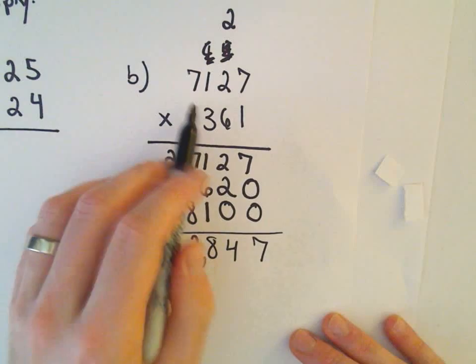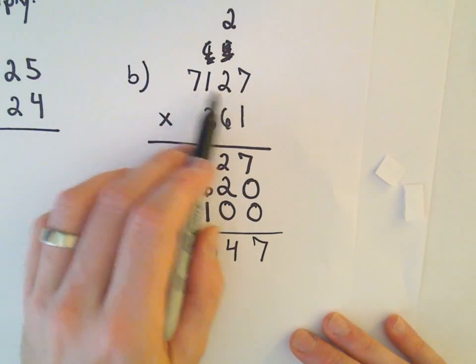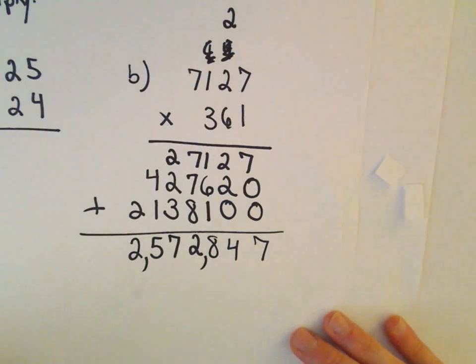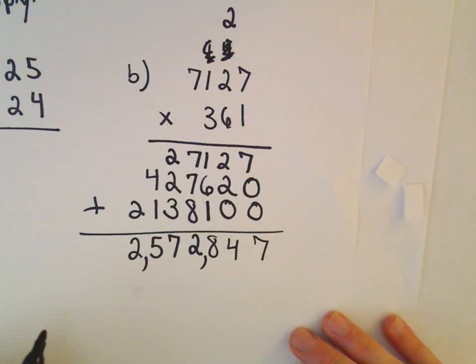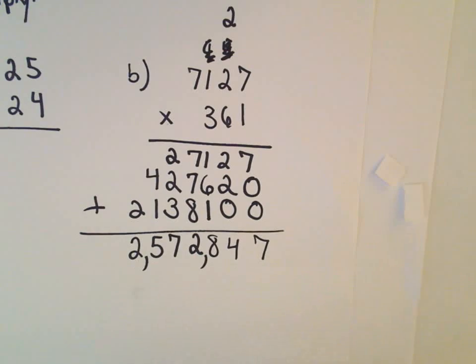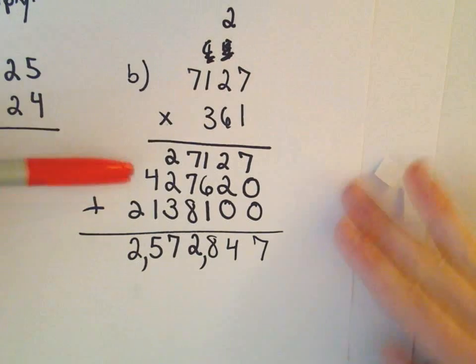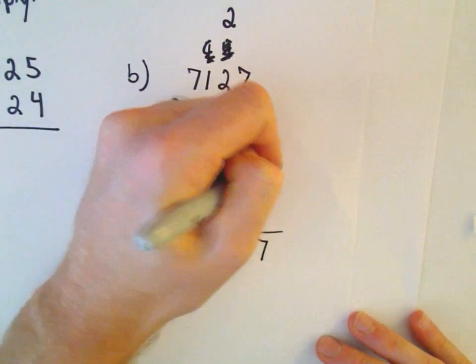So if you multiply 7,127 by 361, you'll have 2,572,847. Okay, and again, all I wanted to point out, what we're doing by doing this process, we're really just doing 1 times the number 7,127. That gives us the first row.